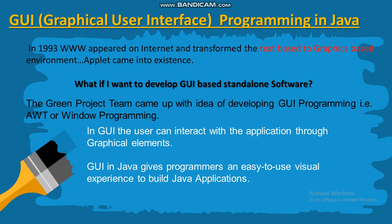But what if you want to develop a GUI-based standalone software? The solution is that the Green project team came up with the idea of developing GUI programming. How to develop that GUI programming? By using AWT, Swing, or window programming concepts. The first unit is AWT programming — Abstract Window Toolkit programming — where we can develop GUI programs. By creating AWT programs, we get graphics-based output and can easily develop GUI-based standalone software.